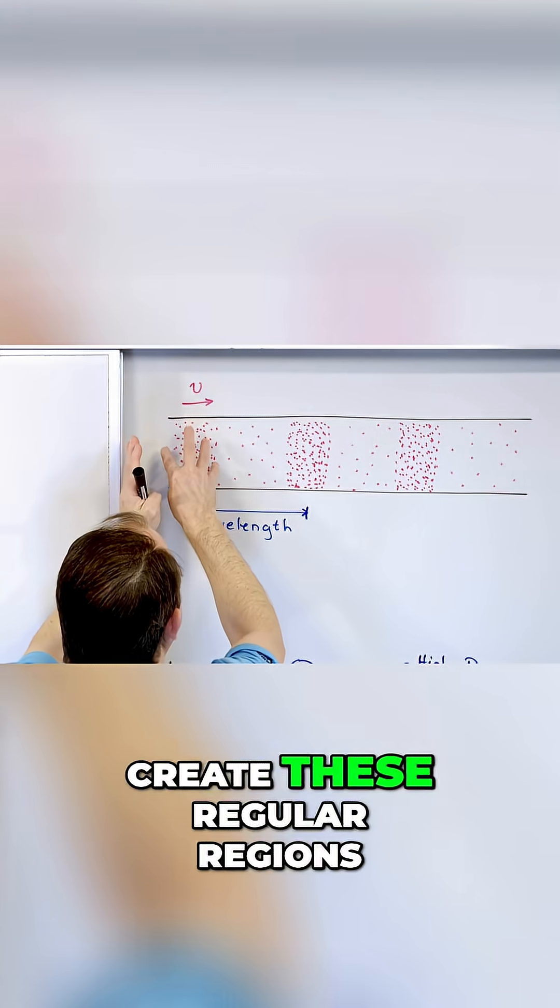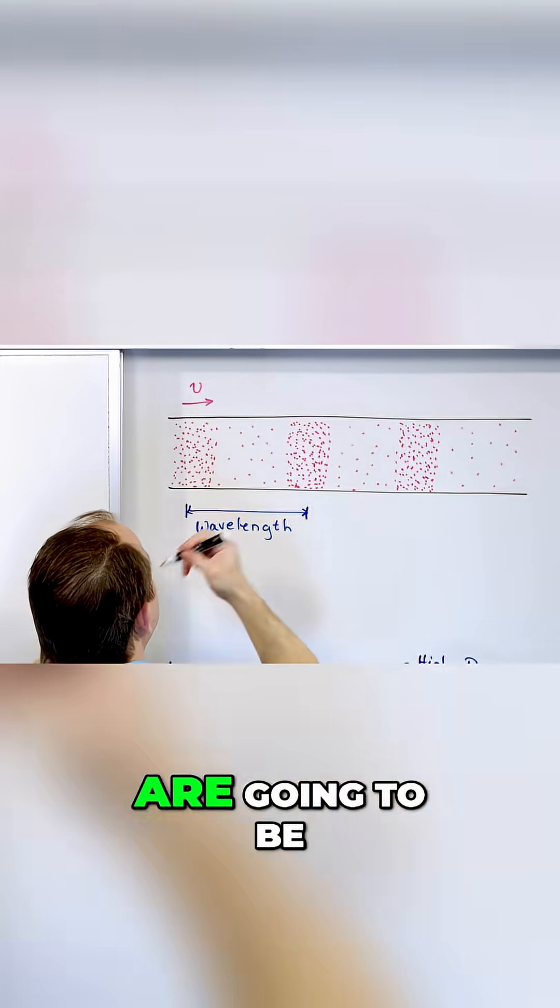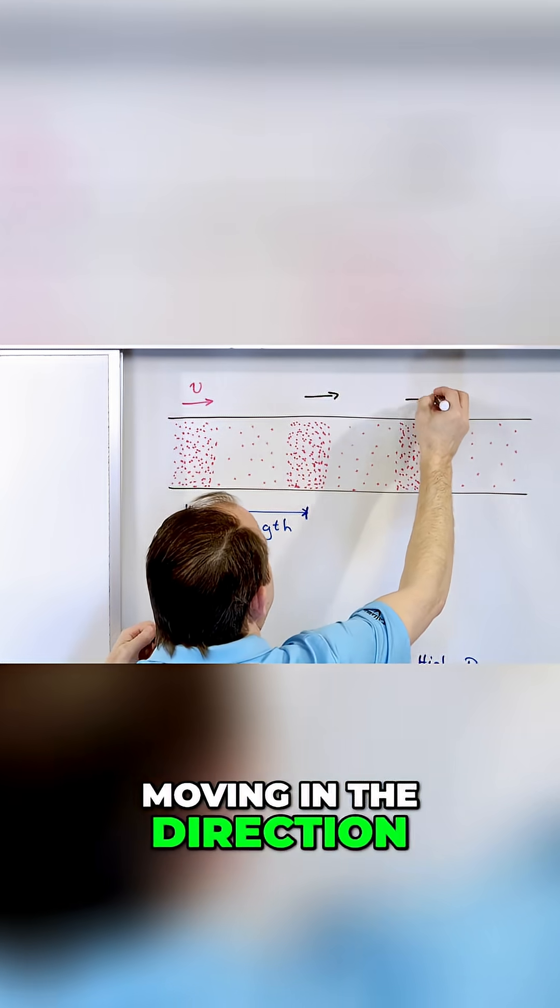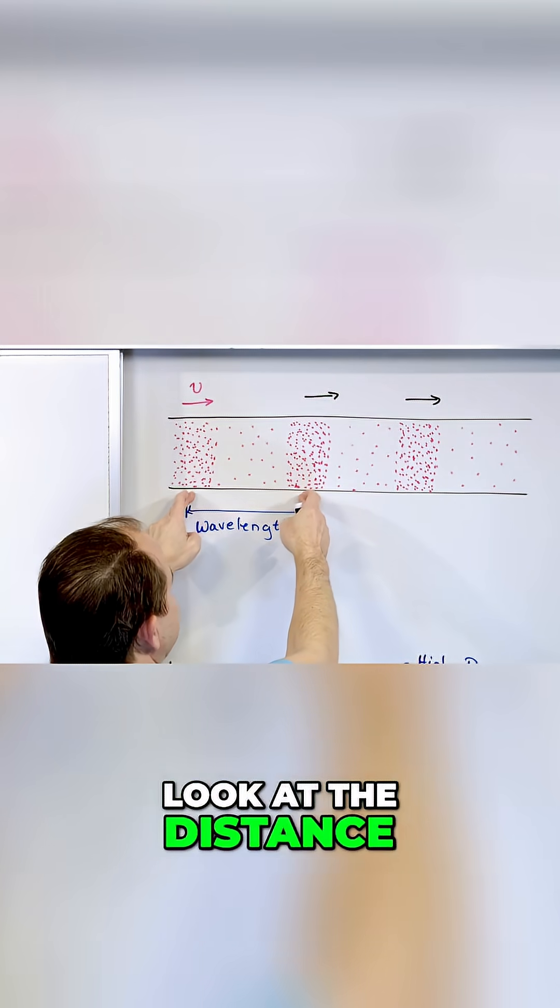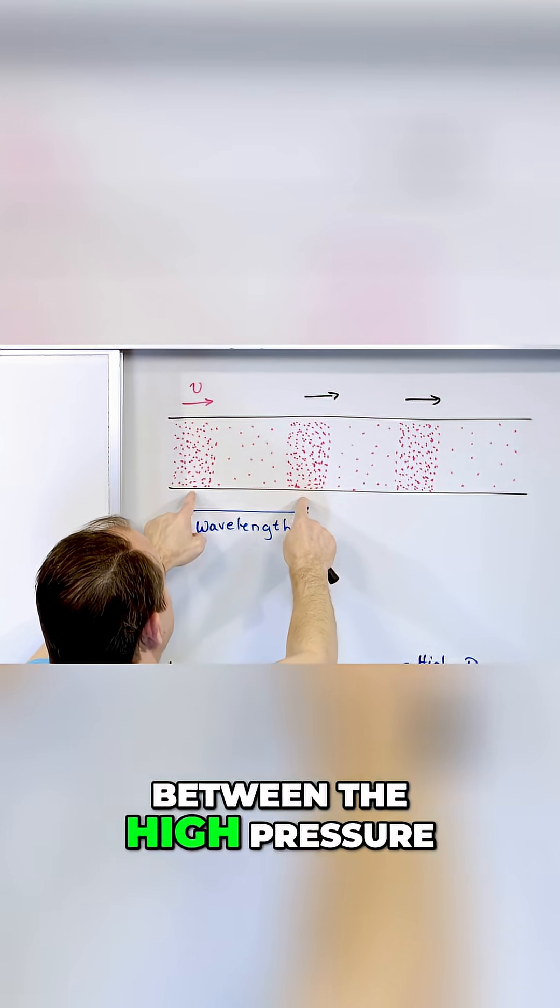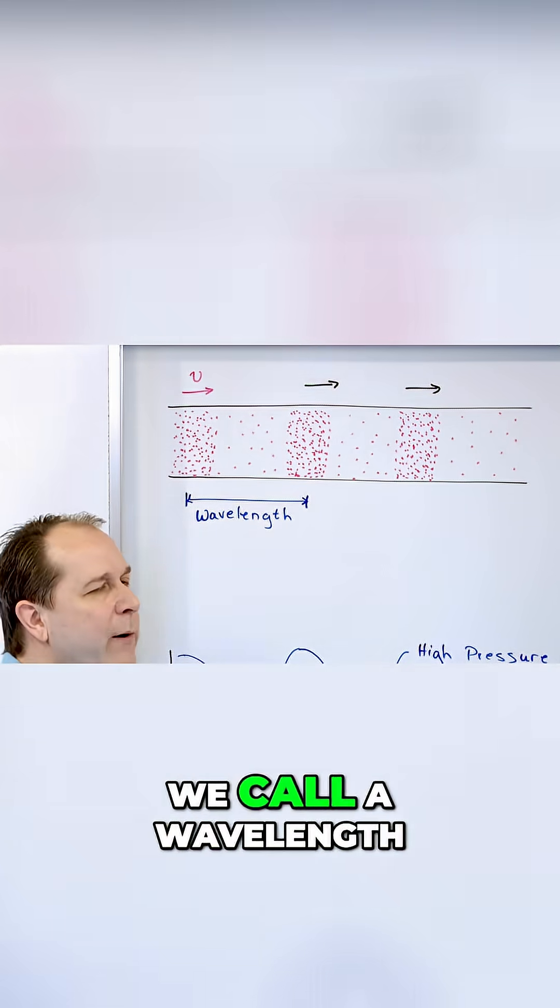Then I'm going to create these regular regions of pressure and the regular regions of pressure are going to be moving in the direction that I've begun the vibration to happen. So then we can look at the distance in centimeters or meters between the high pressure areas which are regular and repeating and we can call that what we call a wavelength.